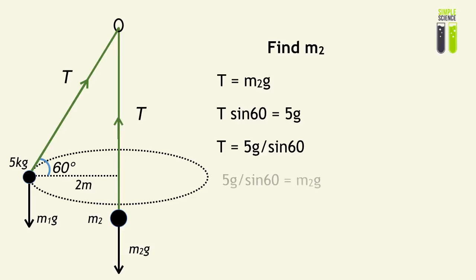When we combine them, we find that 5g divided by sin 60, rearranged from the above calculation, equals M2g. Therefore, we can find M2, which equals 5.77 kilograms.